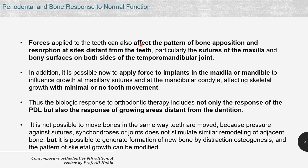The force does not only affect teeth and the periodontium around them; it can also affect the pattern of bone apposition and resorption at sites distant from the teeth, like the sutures of the maxilla, bony sutures, or surfaces on both sides of the temporomandibular joint, when we apply extraoral appliances or functional appliances. The biological response there is a little different, but we can generate formation of new bone at sutures by doing distraction osteogenesis, and we can use this phenomenon to modify skeletal growth.